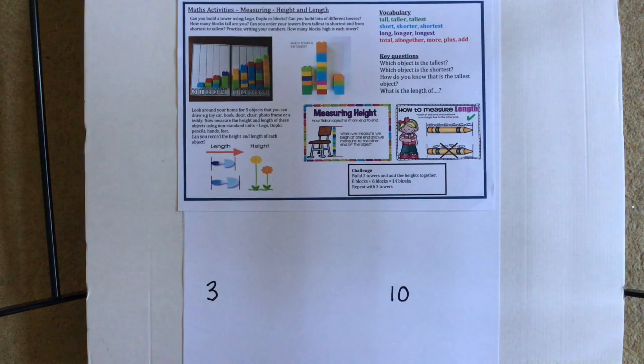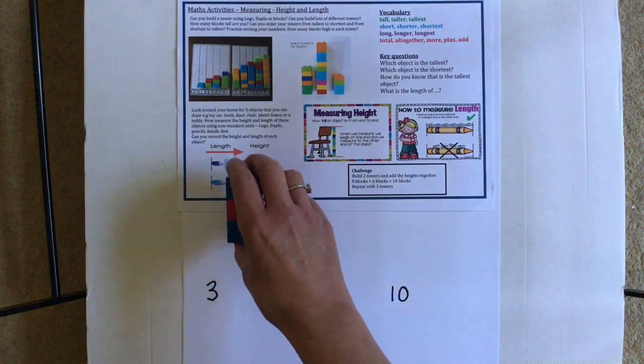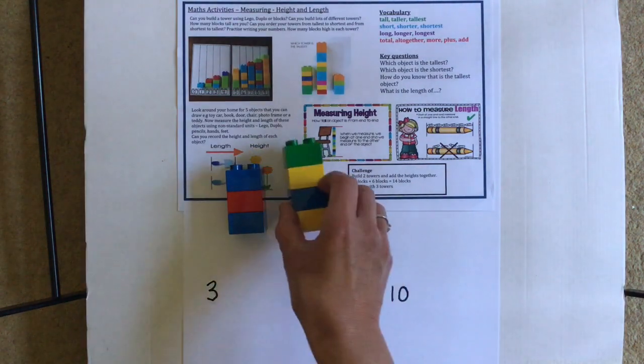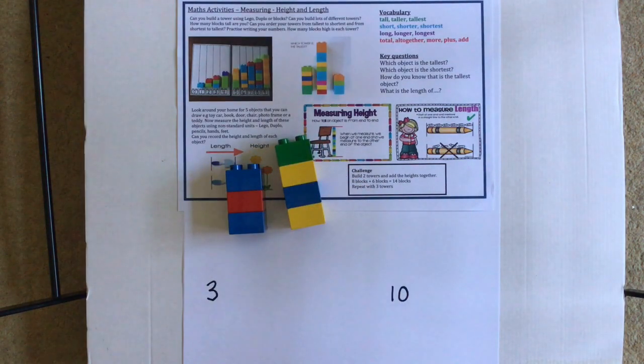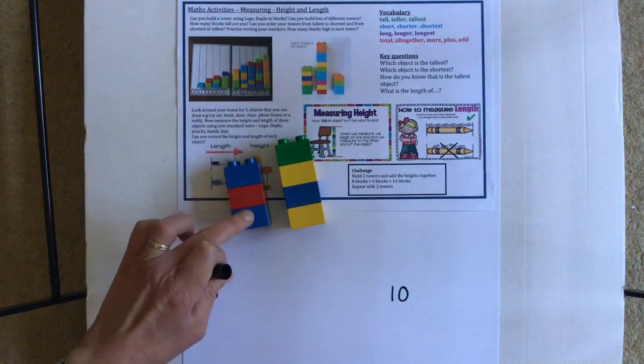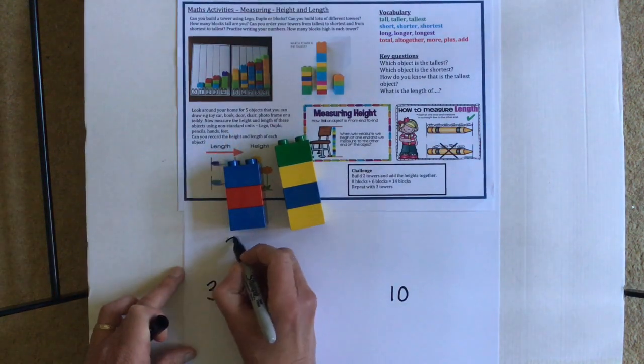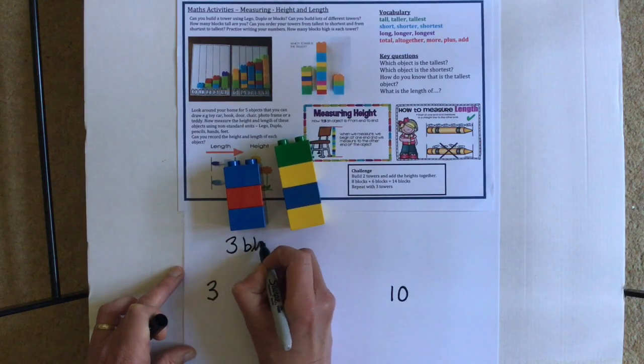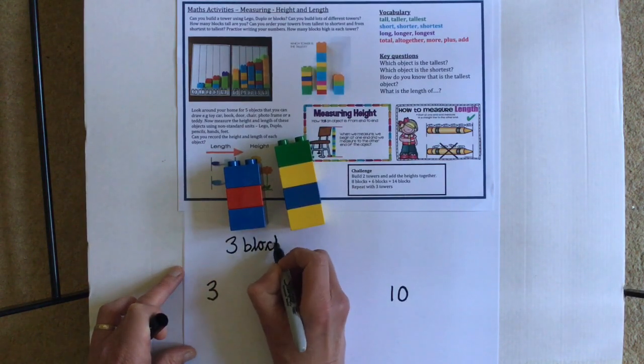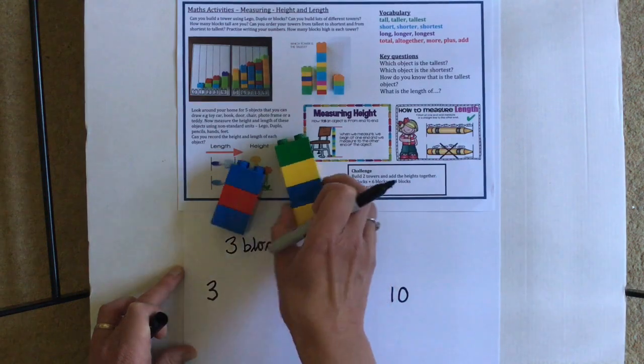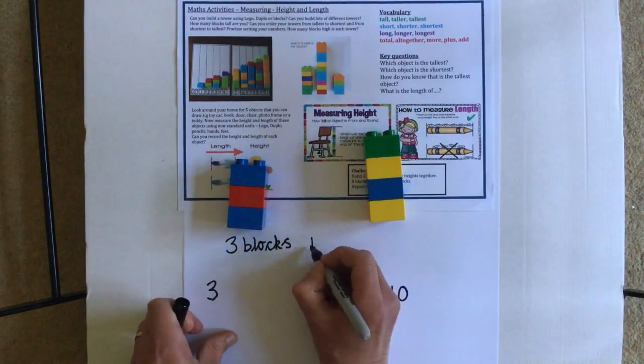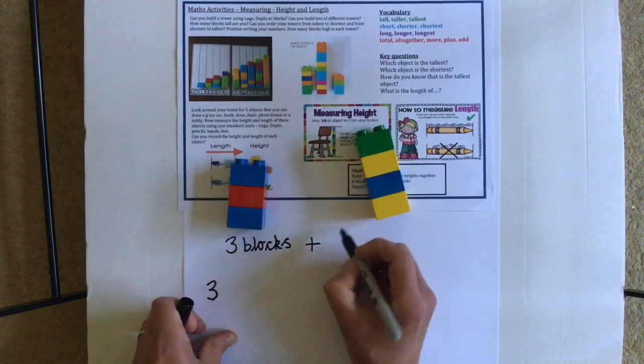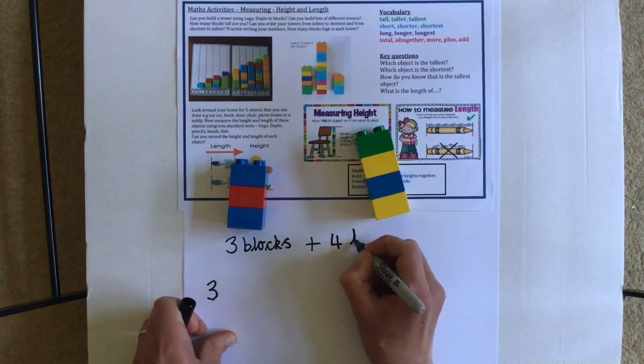It says eight blocks add six blocks equals 14 blocks. So you're doing a number sentence and adding sentence with your towers. Shall we have a quick try at that before we finish? I'll choose that tower and I think I'll choose that tower. So let's write a number sentence about these blocks. If I've got how many here? One, two, three blocks. Three blocks. And then I'm going to add on four blocks. One, two, three, four. Add four blocks.